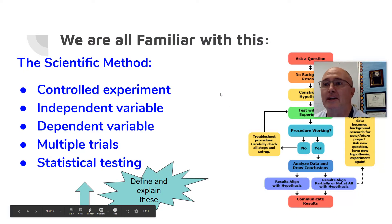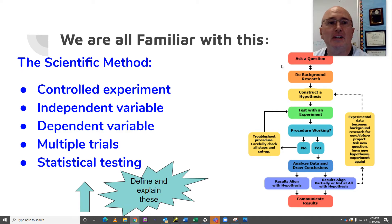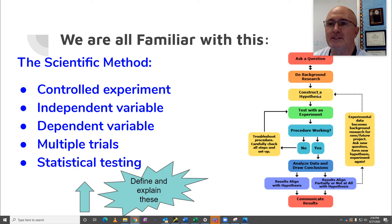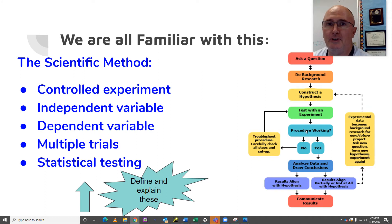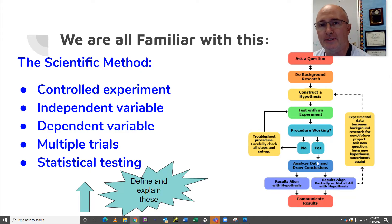This is one that everybody should be very familiar with right up here. We start with a question. You do a little background research on it. You come up with your own hypothesis, then you test your experiment. Now, if your experimentation is working and there's no problems with your design, that's great. You analyze results. If you did have troubles with your procedures, then you troubleshoot, rewrite your research plan, come up with new procedures, and try this again.